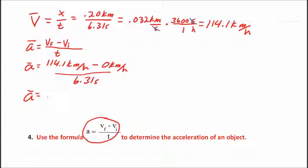So we work this out and we find out that his average acceleration is 18.1 kilometers per hour per second. Kilometers per hour per second. Well how do we get this unit in here? How do we get this unit of measurement?